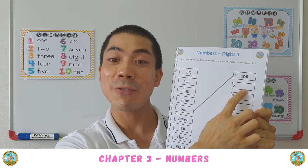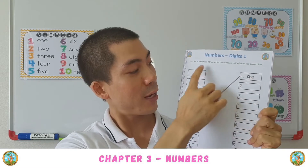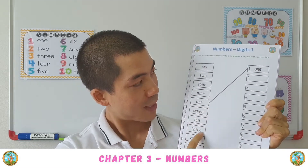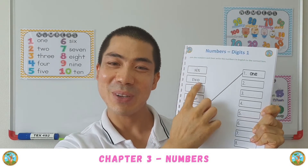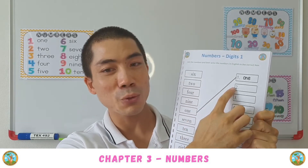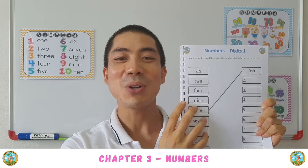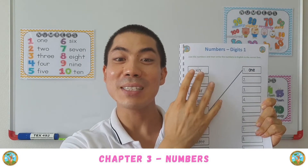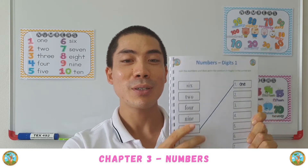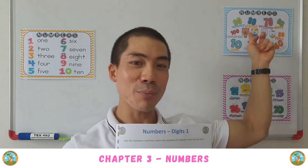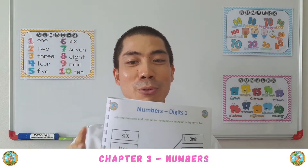Next we have to find 2. So where is 2? And it's here. So we can draw a line straight to 2 and then we can write 2. So let's try to do all of these by ourselves. And if we don't remember, we can look back at the previous pages to refresh our memory.